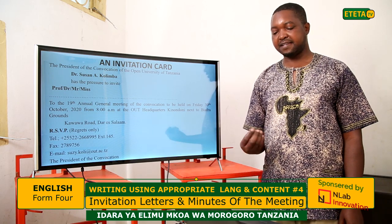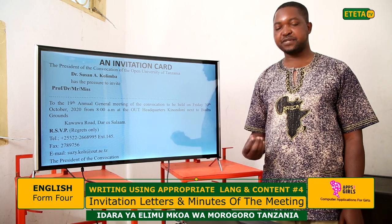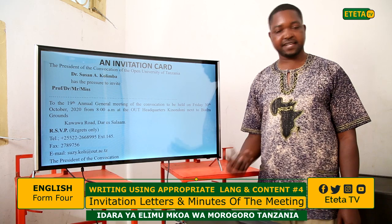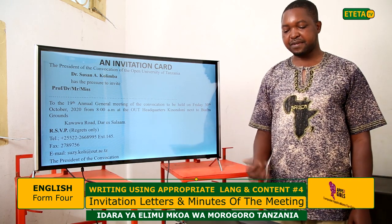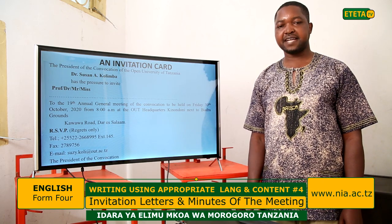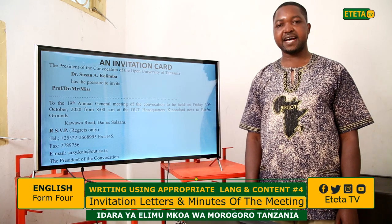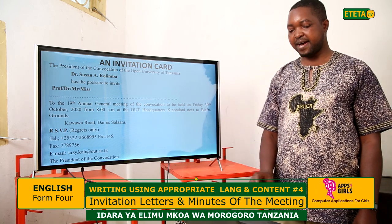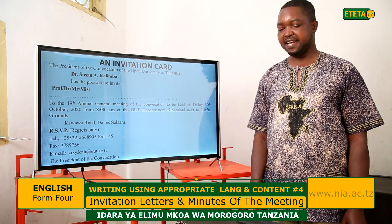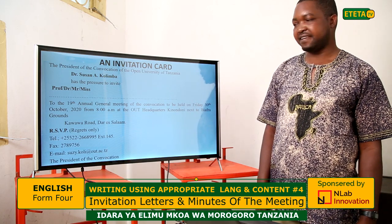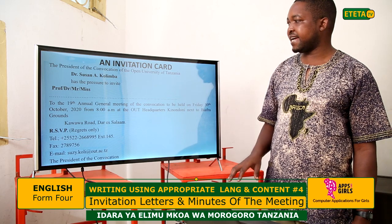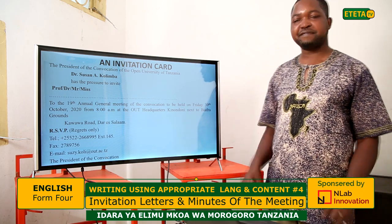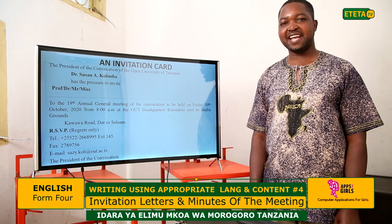Then you have the letters RSVP. It's for those who will not be able to attend the occasion — they can respond and inform the concerned authorities that they cannot be there due to unavoidable circumstances. We have the Regrets Honorary, commonly abbreviated as RSVP. The full contact is given: telephone number, fax number, and email address. At the end of this invitation card, you have the name of the one who prepared the card — the president of the convocation. That is the way an invitation card should be written.